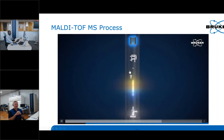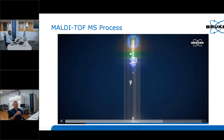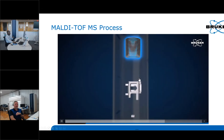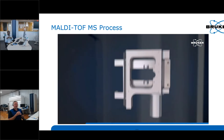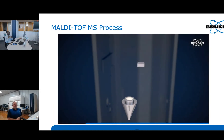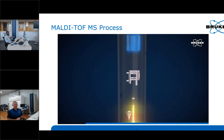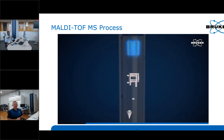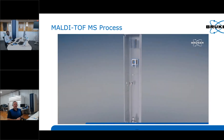In reflectron mode, there is an added element: reflectron plates are used to divert the ions toward a secondary detector. The combination of a longer flight path and the reflectron plates that help focus the ions onto the secondary detector results in higher resolving power in reflectron mode versus linear mode.